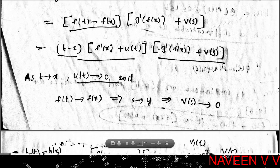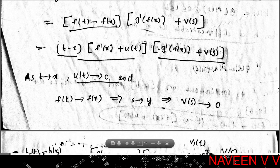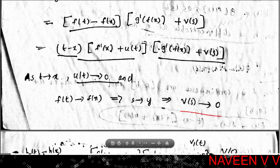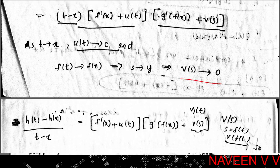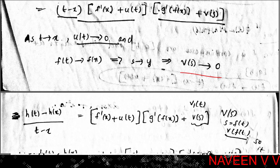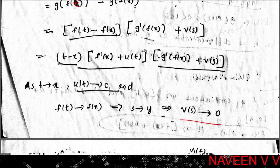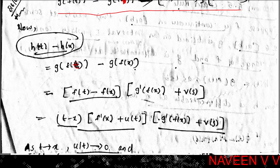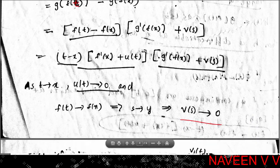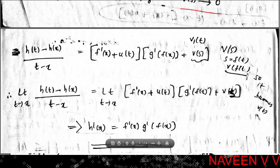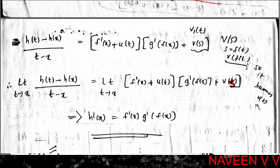As t→x: u(t)→0 since f is differentiable. By Theorem 5.2, since f is differentiable at x, f(t)→f(x), so v(s)→0. Dividing h(t) - h(x) by t - x and taking the limit: [h(t) - h(x)] / (t - x) = [f'(x) + u(t)]·g'(f(x)) + v(s)·something, and taking limit t→x gives h'(x) = f'(x)·g'(f(x)).